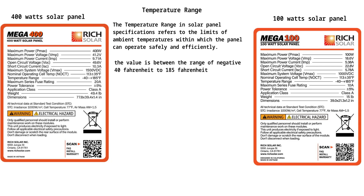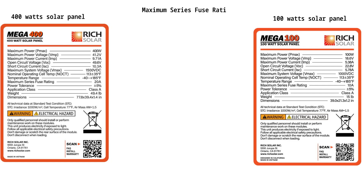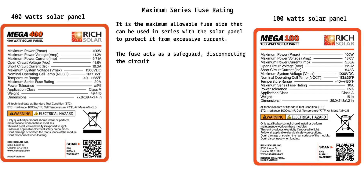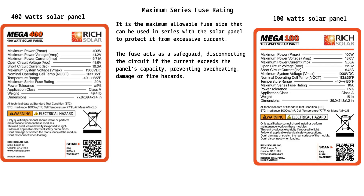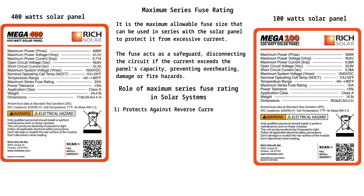8. Maximum series fuse rating is the maximum allowable fuse size that can be used in series with the solar panel to protect it from excessive current. The fuse acts as a safeguard, disconnecting the circuit if the current exceeds the panel's capacity, preventing overheating, damage, or fire hazards. Its roles include: 1. Protecting against reverse current — in conditions such as shading or a fault, current can flow backward into the panel, and the fuse prevents this from exceeding safe limits. 2. Ensuring system safety — if a short circuit occurs, the fuse blows to interrupt excessive current, protecting the panel and other components.